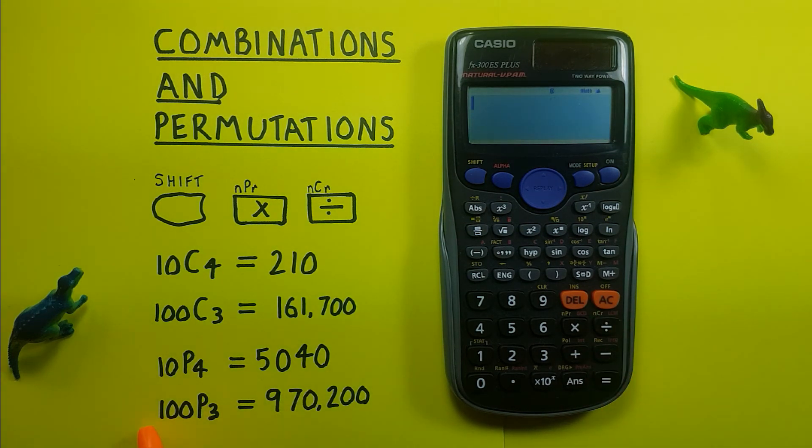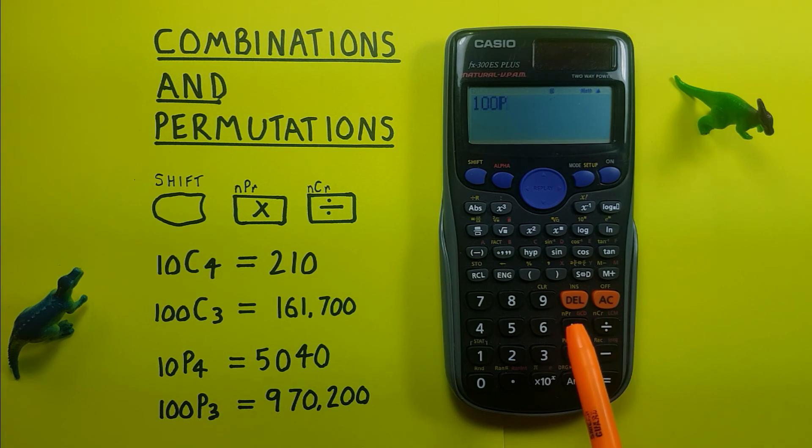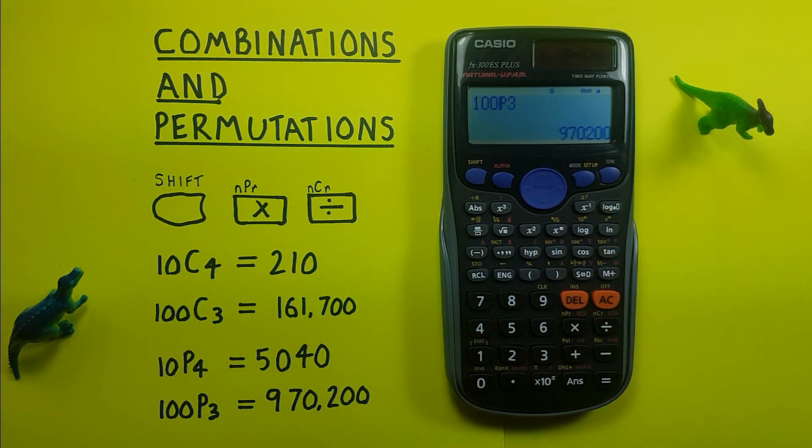One more example: if we have 100 objects and want to choose 3, place 100 on the screen, then press shift multiply, there's our P, then 3 and equals. We see we have 970,200 possible permutations.